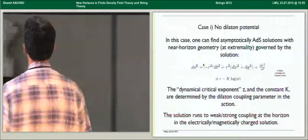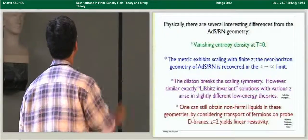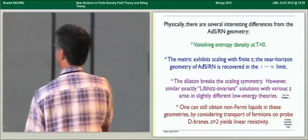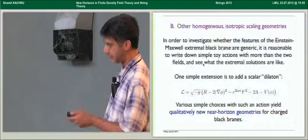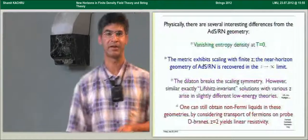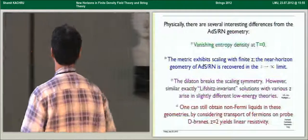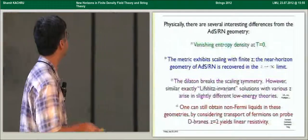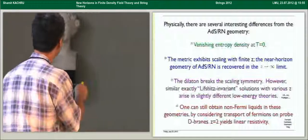Now, physically, even in this very simple case, this simple metric, there are several interesting differences from the Reisner-Nordstrom geometry. First of all, because of this factor of R squared in front of R2, there's vanishing entropy density at T equals zero, which is a big plus. Now, the metric also still exhibits a scaling, a scaling variance with some finite Z. The near horizon geometry of AdS Reisner-Nordstrom, you might think you should recover when you take alpha here to zero. You do. Z scales like one over alpha, and in that limit, Z goes to infinity. And the metric you get is indeed one where time rescales, but space does not. Now, on the other hand, this metric, or sorry, the full solution doesn't really correspond to that of a scale invariant fixed point because there's this pesky running scalar. So the dilaton breaks the scaling symmetry. If you want exactly scale invariant solutions with the same properties, you can find them as solutions of slightly different low energy theories, but I will not be interested in those today.